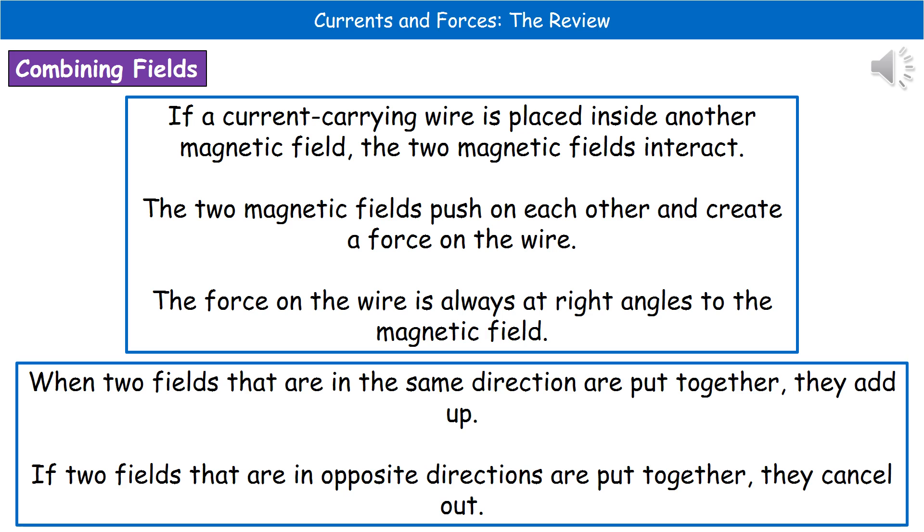As a result of that interaction, we end up with a force acting on the wire. And that force on the wire is always at right angles to the magnetic field. If the two fields are in the same direction, they're going to add up, whereas if the two fields are in opposite directions, they cancel each other out.